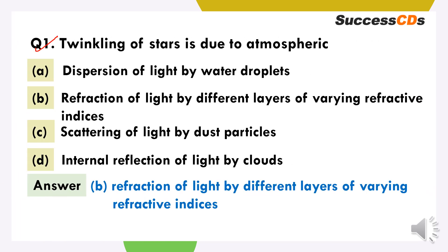Twinkling of stars is due to: option A, dispersion of light by water droplets; option B, refraction of light by different layers of varying refractive indices; option C, scattering of light by dust particles; option D, internal reflection of light by the clouds. The correct option is that the twinkling of stars is due to atmospheric refraction of light. Jo bhi refraction of light hoti hai, jo atmosphere and the gases around it karti hai, uski wajay se twinkling of stars ho paata hai.